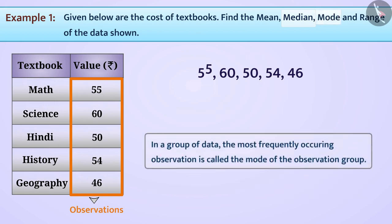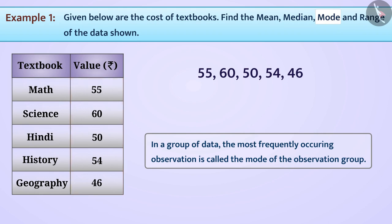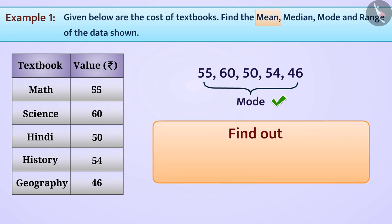Also, we have learned that in a group of data, the most frequently occurring observation is called the mode of the observation group. Looking back at the data provided for the costs of the textbooks, you may see that each observation has occurred at most once. Do you think we can infer that all observations in this data are modes? Well, yes, they are.